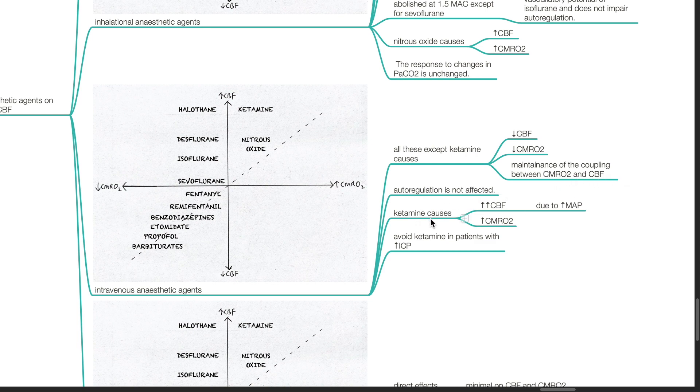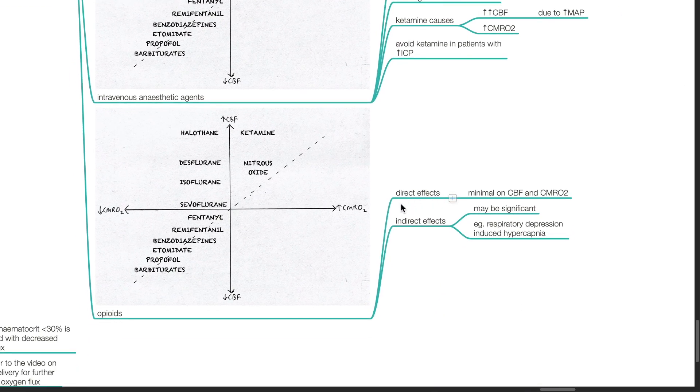Ketamine causes increase in CBF and increase in CMRO2. Avoid ketamine in patients with raised ICP. Opioids. Direct effects are minimal on CBF and CMRO2. However, indirect effects may be significant, for example, respiratory depression-induced hypercapnia.